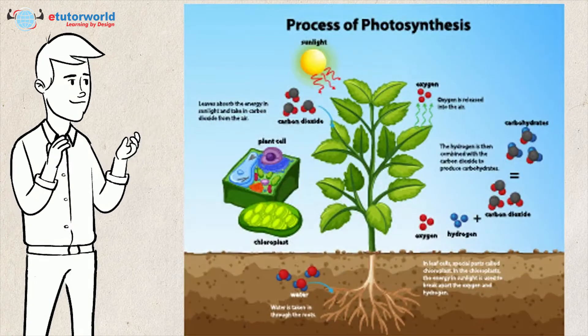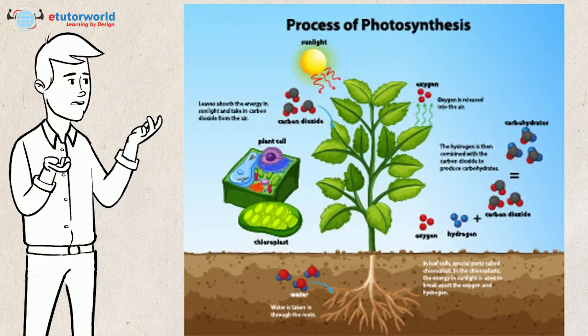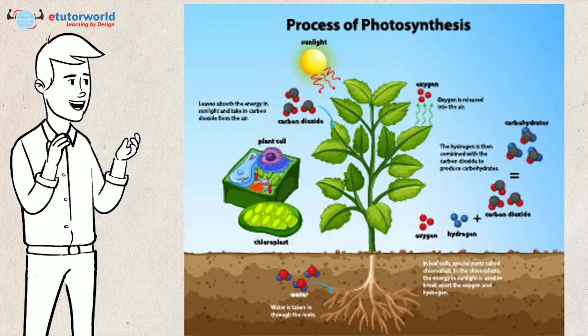So, photosynthesis is the process by which plants and some other organisms like algae use light energy to make food from carbon dioxide and water.